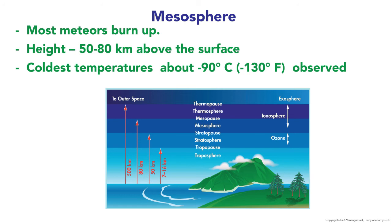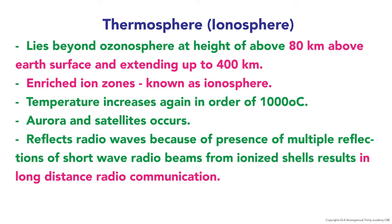The next sphere is the thermosphere, otherwise called the ionosphere. It lies beyond the ozonosphere at a height of above 80 kilometers and extending up to 400 kilometers. It is enriched with ion zones. Temperature increases again to the order of 1000 degrees Celsius. Aurora and satellites occur here. This zone reflects radio waves due to multiple reflections of shortwave radio beams from ionized shells, enabling long-distance radio communication.